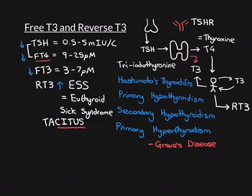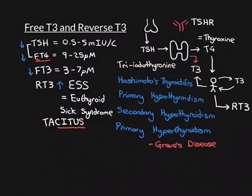The main indication for measuring reverse T3 is euthyroid sick syndrome. For free T3, the main two indications are early stage Graves' disease and euthyroid sick syndrome. There are other much rarer conditions where it is relevant to measure these, but they are such small print that it's hardly worth knowing them. These are the two main reasons you would do these blood tests. For most standard problems, the normal TFTs — TSH and free T4 — are perfectly sufficient.